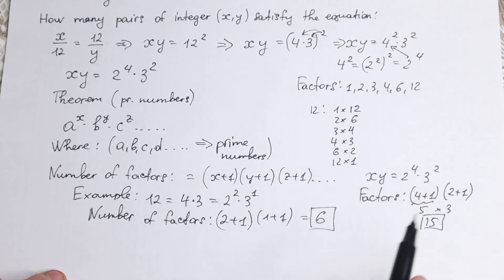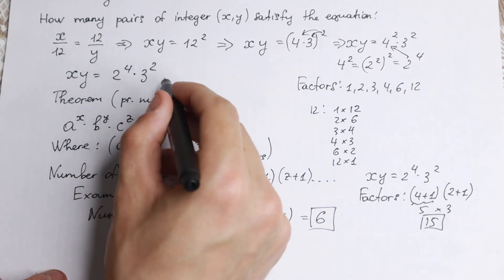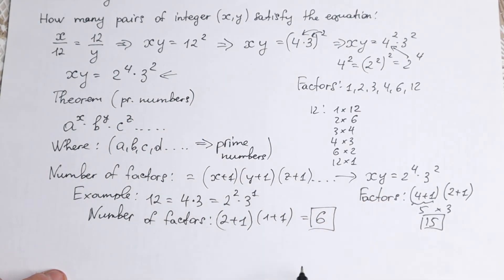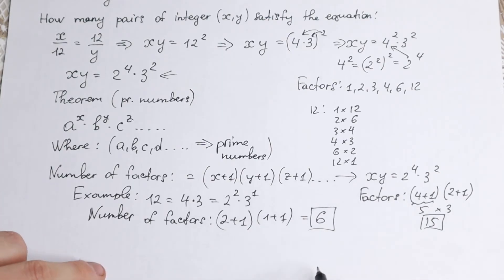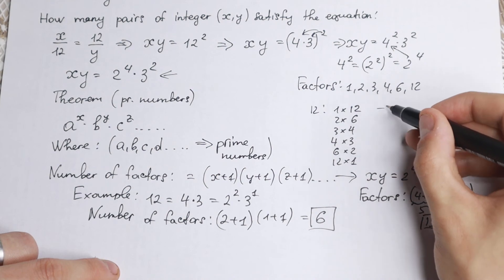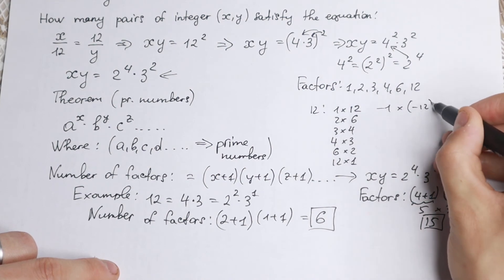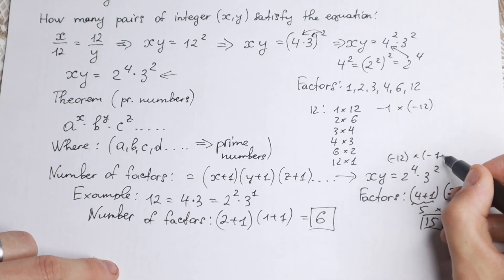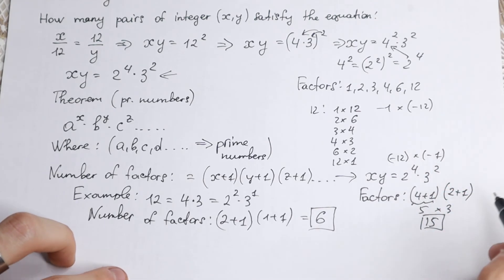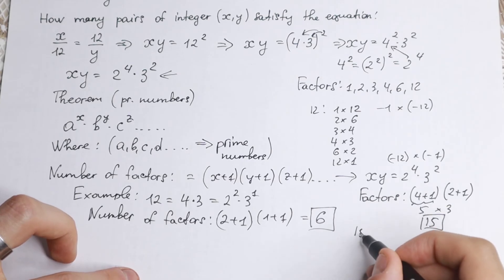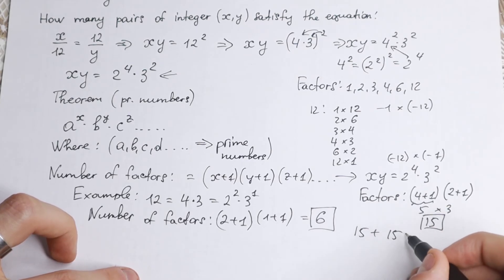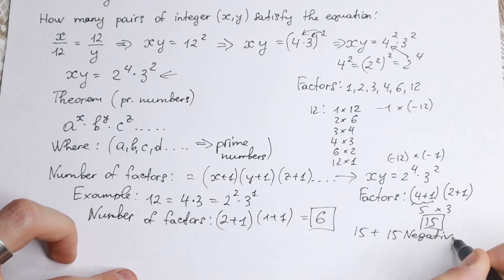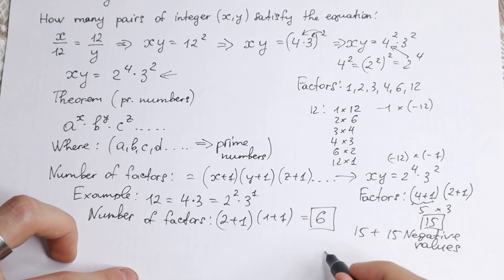But I want to mention that this theorem works only with positive values. We can still write it as minus 1 times minus 12, or minus 12 times minus 1, so we can use negative pairs as well. So we have 15 positive pairs, plus 15 negative pairs, giving a total of 30.